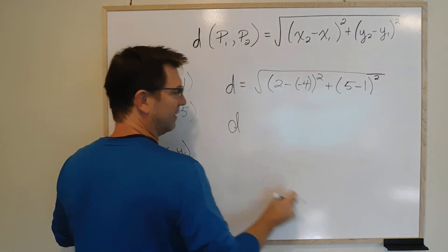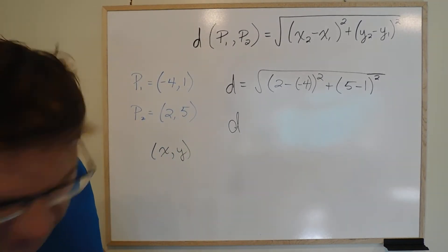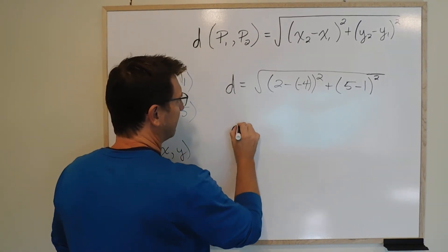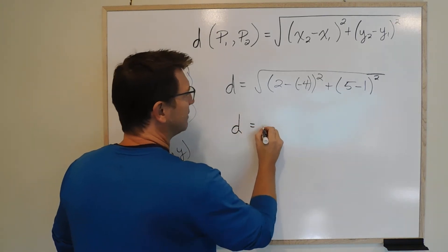And then d, and that is an ugly, ugly looking d. Let's try this again. Much better. So that's the square root.